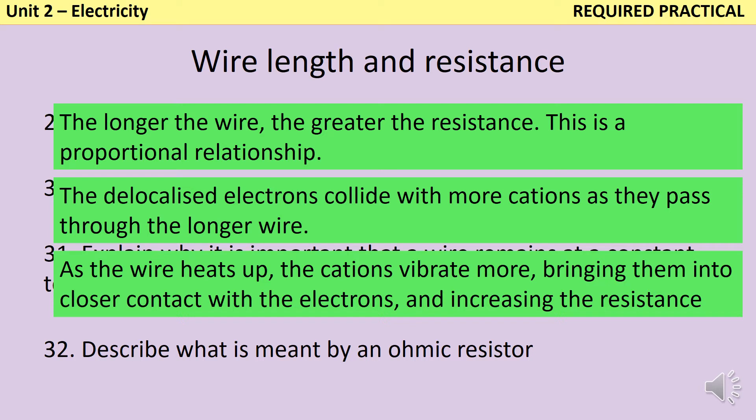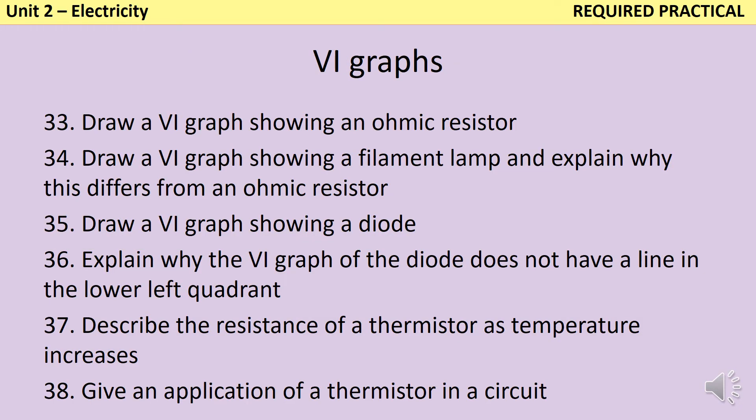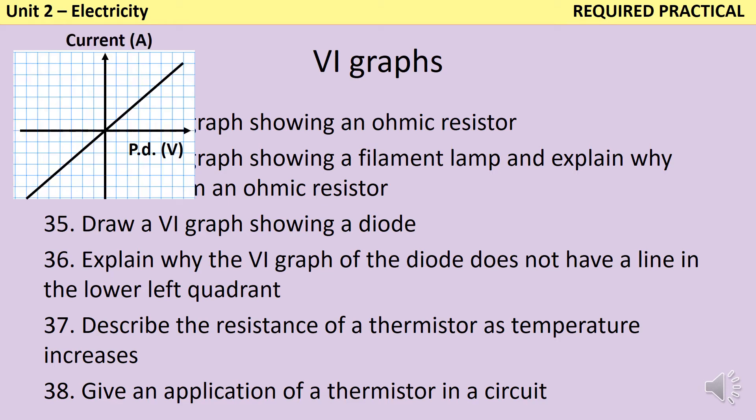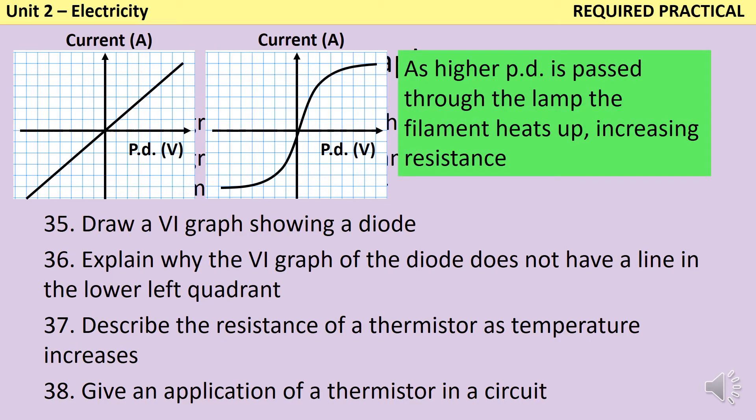An ohmic resistor is one for which there's a directly proportional relationship between the potential difference and the current. There are three VI graphs you need to be able to draw. As we've just said, the VI graph for an ohmic resistor will be directly proportional. This is different to a filament lamp because the filament lamp will heat up. So as a higher potential difference passes through the filament and it heats up and turns on and glows, that means that the resistance is going to go up. And so this means that as you carry on increasing potential difference, you don't carry on increasing current, and instead you get a sigmoidal curve that looks like this.